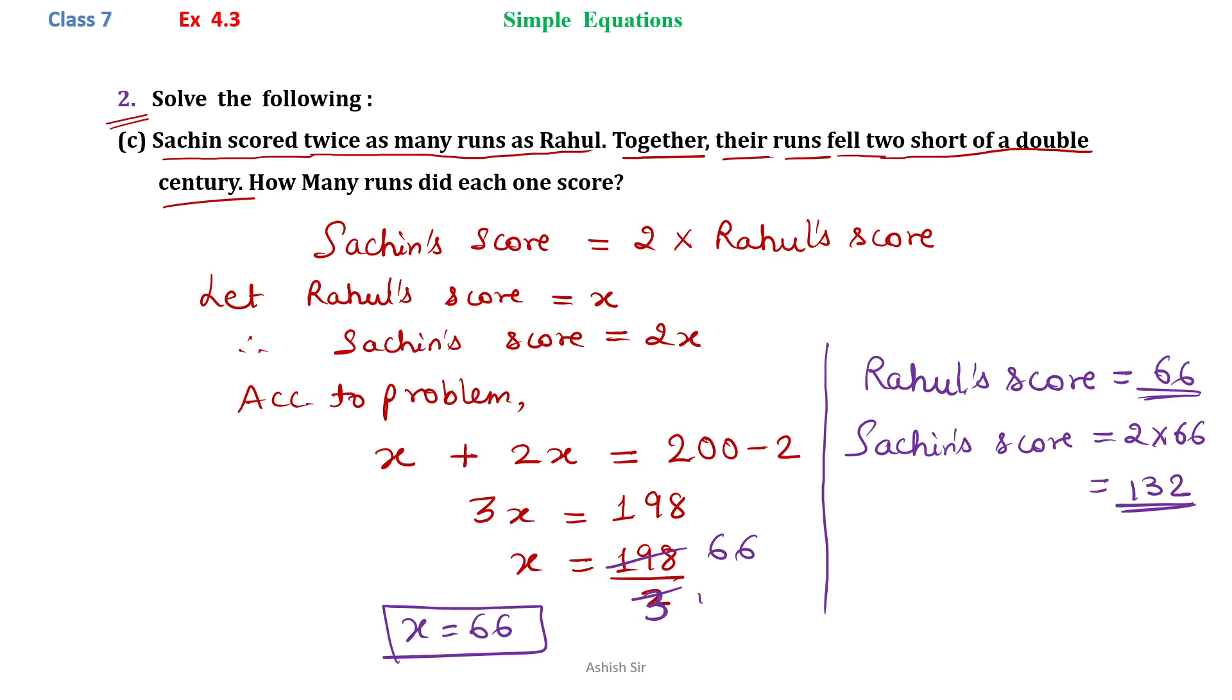So our answer is Rahul's score 66 runs and Sachin's score 132 runs. So our answer is right.